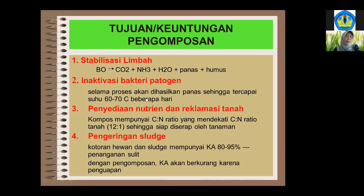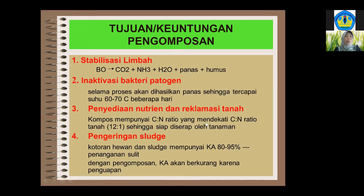Termasuk biji-biji gulma yang mungkin ada di sisa residu tanaman itu akan mati dan tidak bisa tumbuh lagi. Keuntungan yang ketiga adalah penyediaan nutrien dan reklamasi tanah. Seperti tadi kulit kopi yang langsung ditaburkan — meskipun mengandung bahan organik tetapi kompleks, tidak bisa diserap oleh tanaman. Setelah pengomposan, C/N rasio media kompos akan menurun mendekati C/N rasio tanah sekitar 12:1.